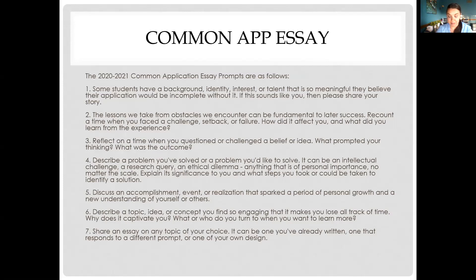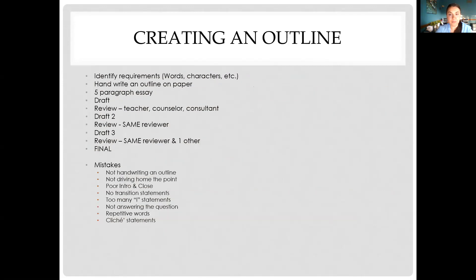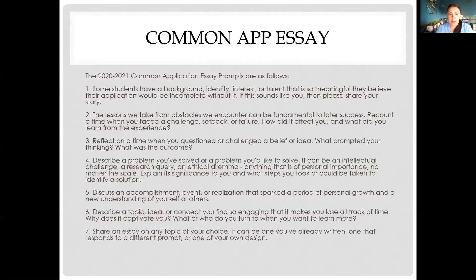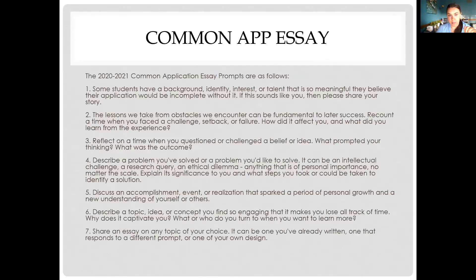Finally, if you're not inspired by any of the other six prompts, number seven says: share an essay on any topic of your choice. I've seen students write poems, haikus, all kinds of things. Before you get to writing, I'd encourage you to choose two or three prompts that spark your interest. Then create an outline. For the common app, the main essay has a maximum of 650 words — roughly five paragraphs — but if you go to 650 words you'd better have a really interesting essay.